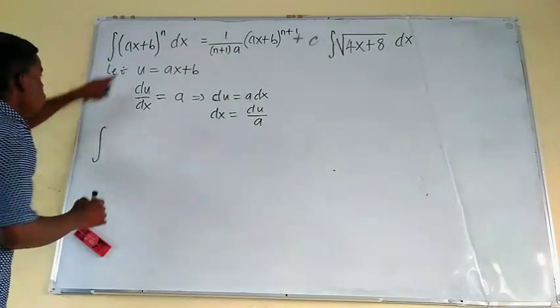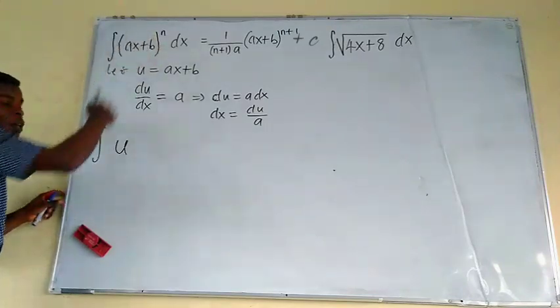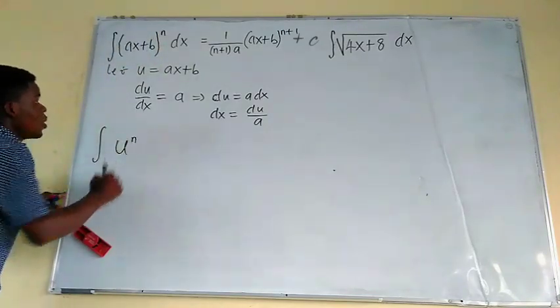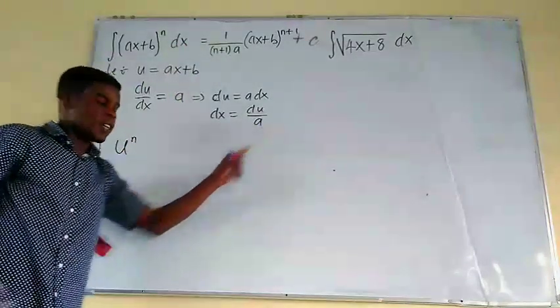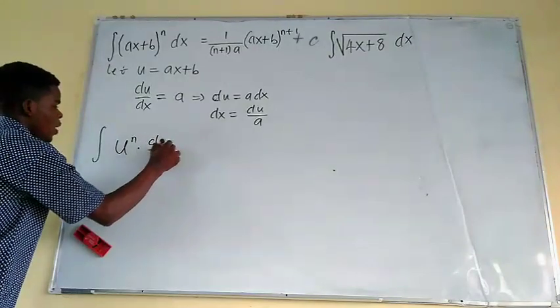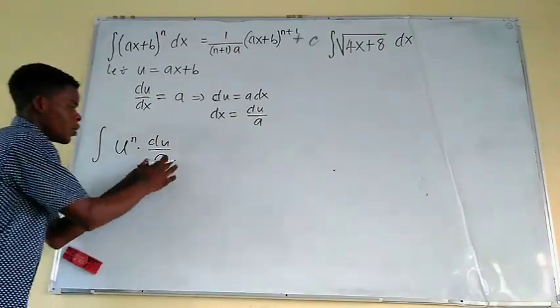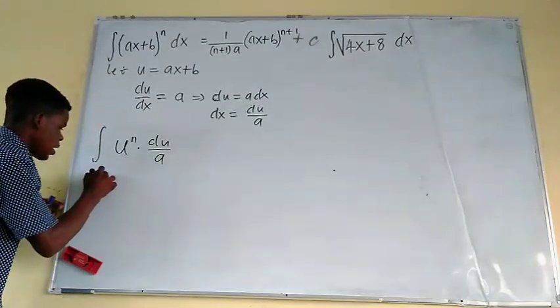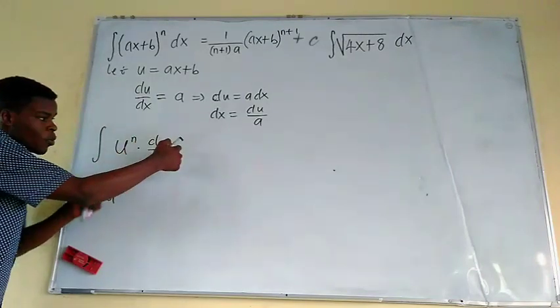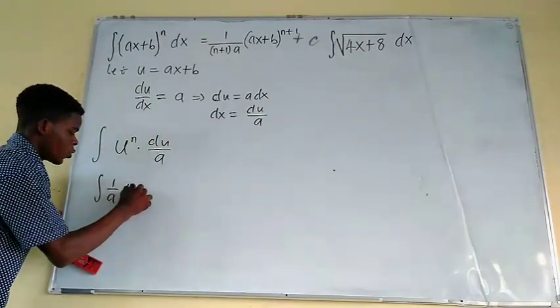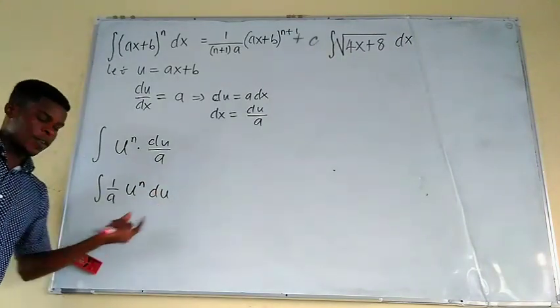We're going to have an integral of, in place of AX plus B, we call that U. So we just say U to the power N. N is still there, we didn't assign it to another variable. This is just DX. And DX is the same thing as saying DU over A. So we just put that in, DU over A, where A is a constant. Very nice.